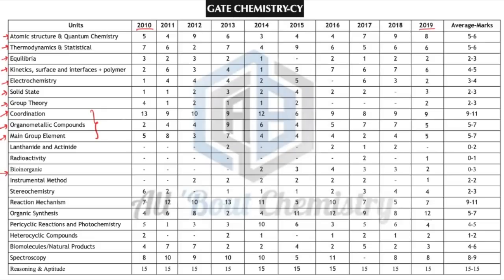Inorganic chemistry ends there. Moving to analytical chemistry — instrumental methods. I suspect one question can be asked, either a one-marker or two-marker, based on TGA method or some titration methods such as amperometric or conductometric titrations.